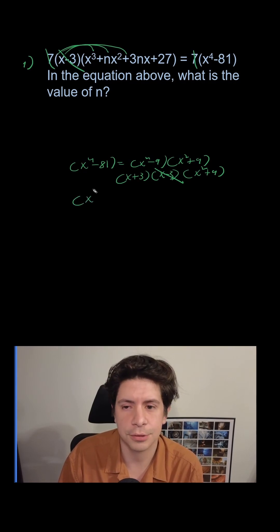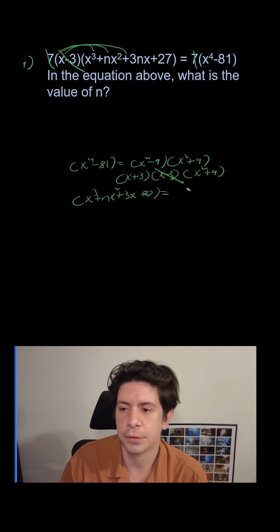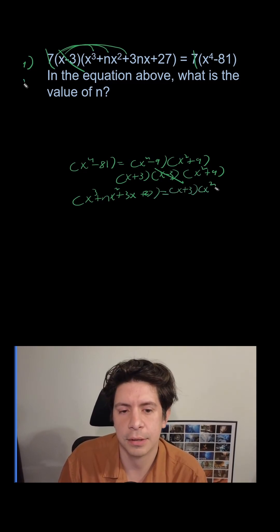So we have x³ + nx² + 3nx + 27 equals (x + 3)(x² + 9).